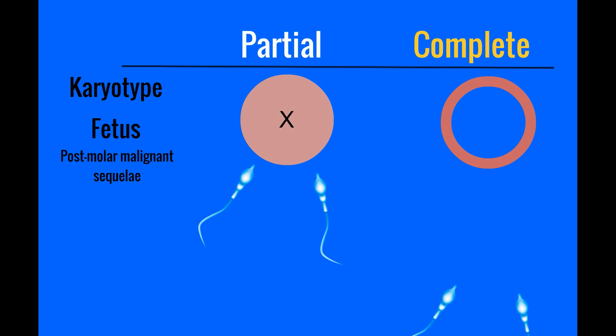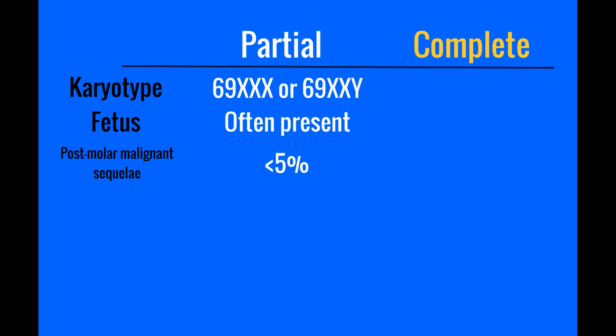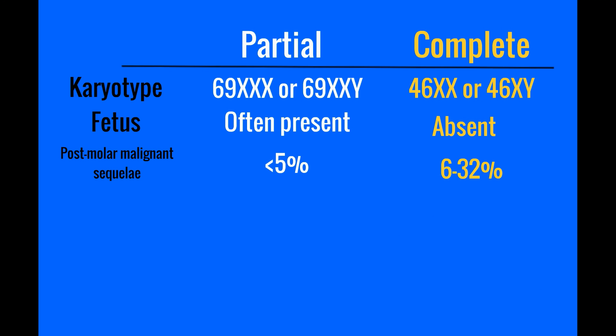Complete molar pregnancies are a result of two sperm fertilizing an empty ovum. The karyotype will be 46XX or 46XY. The fetus will be absent, and there is a 6-32% chance of a complete mole becoming malignant.